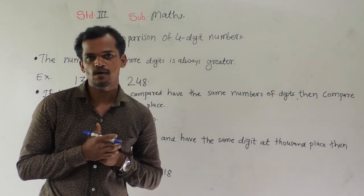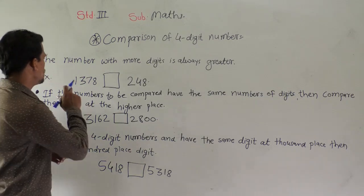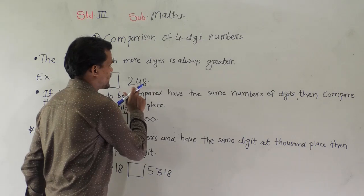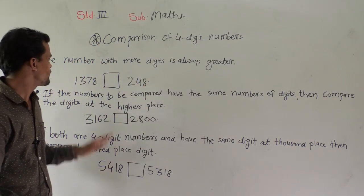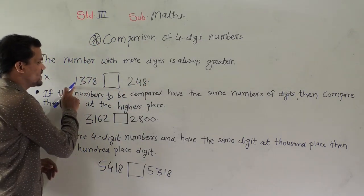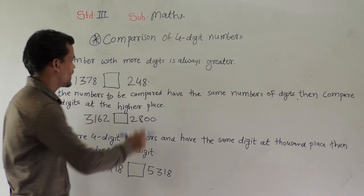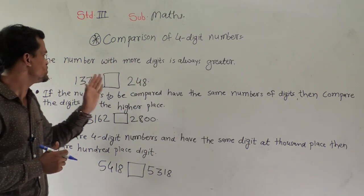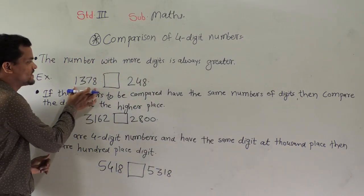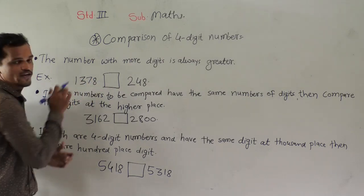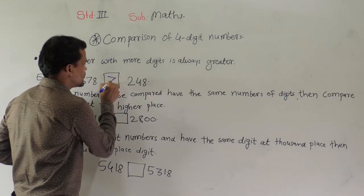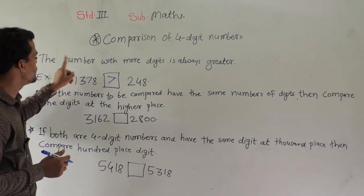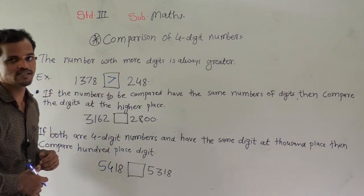We will see one example so you will understand. 1378 and another number is 248. This number contains 1, 2, 3, 4 digits, and this number contains 1, 2, and 3 digits. The number which has more digits is 1378, so that number is always greater than this number. First case: the number with more digits is always greater.